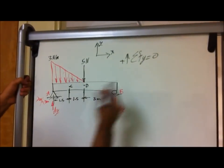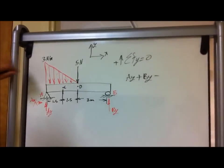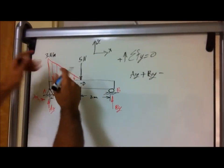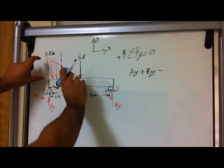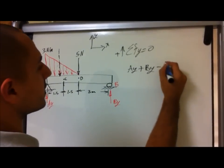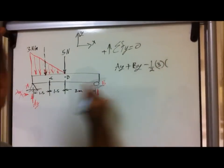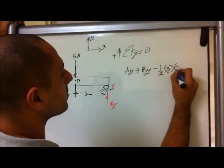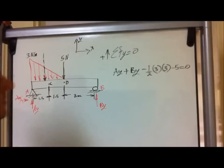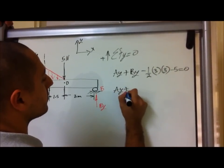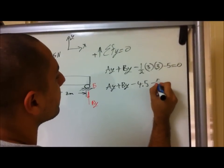The summation of F-Y equals zero. We have A-Y plus B-Y minus the distributed force resultant. The resultant of the triangular distributed force is one-half times base times height — one-half times three times three Newtons per meter — and we also have another force pointing downward, which is five Newtons. So: A-Y plus B-Y minus 4.5 minus 5 equals zero.